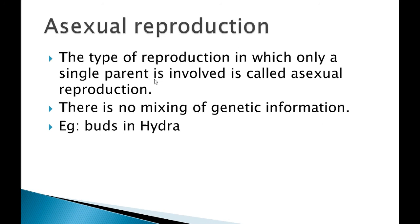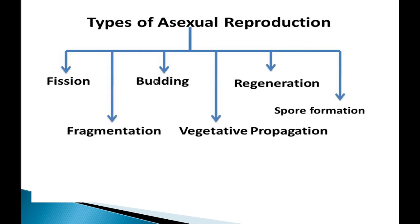There is no mixing of genetic information in asexual reproduction. Example: budding in hydra. Now we have types of asexual reproduction. The first is fission, second is fragmentation, budding, vegetative propagation, regeneration, or spore formation.